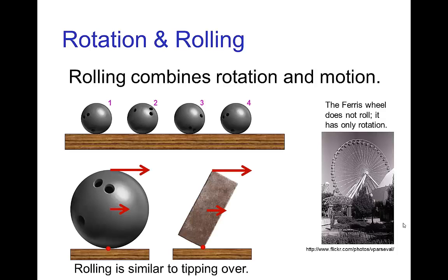One concept which is helpful to picture is that rolling is very similar to tipping over. When we have something tipping over, we have a point which it's tipping around, and the farther we are from that point on the object, the faster the motion.